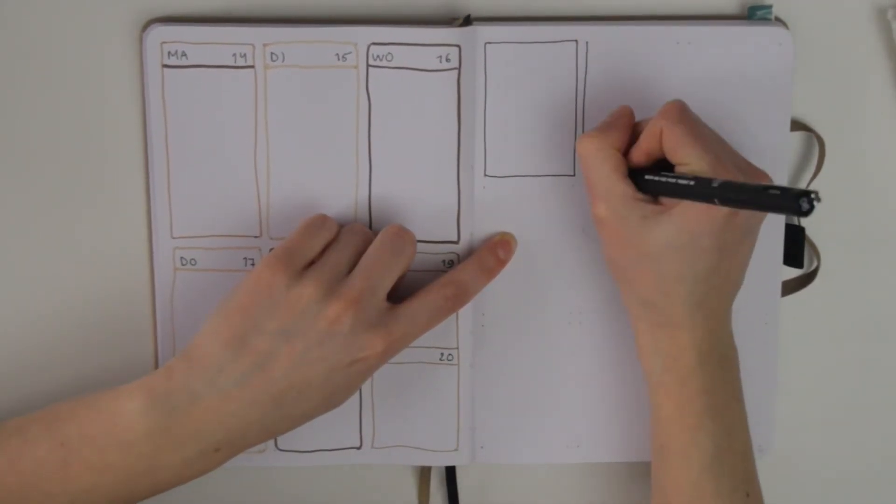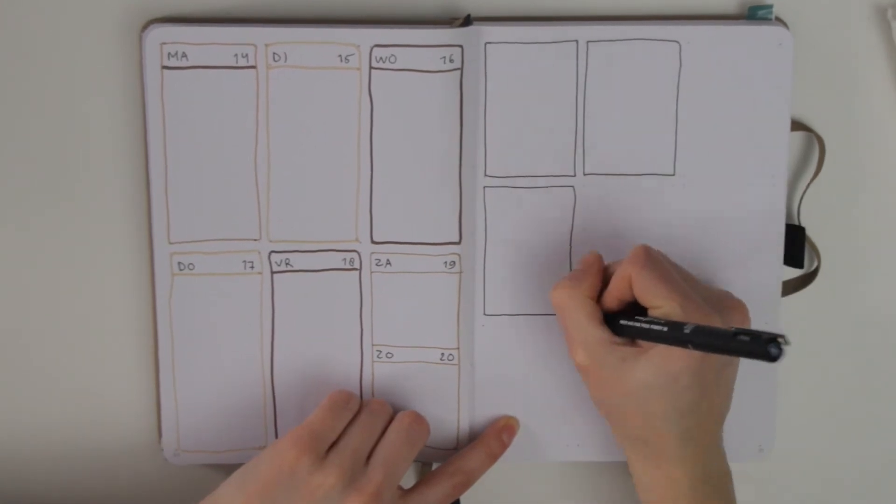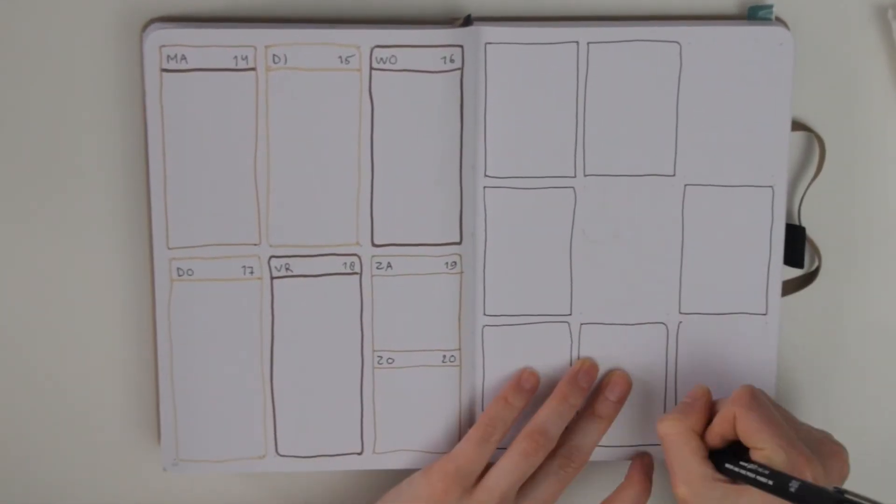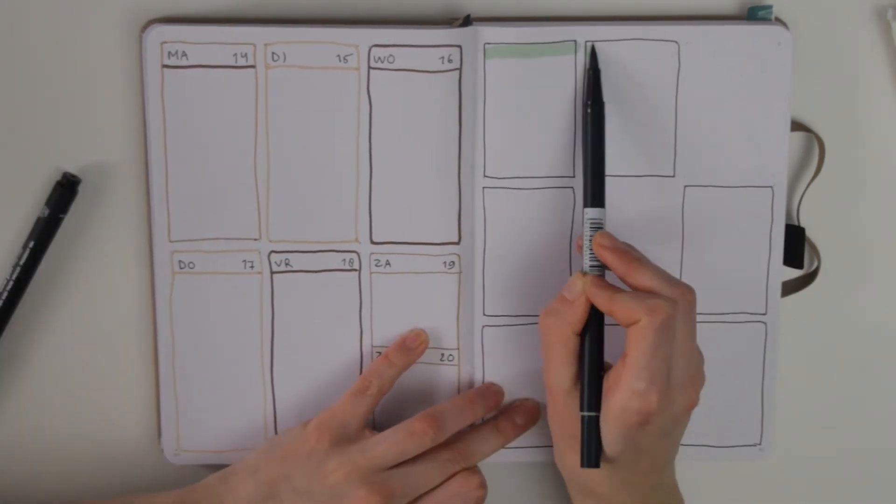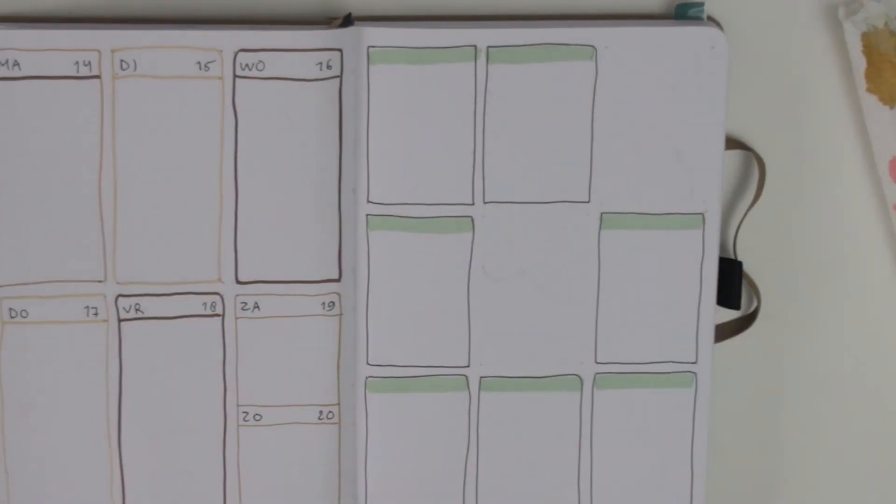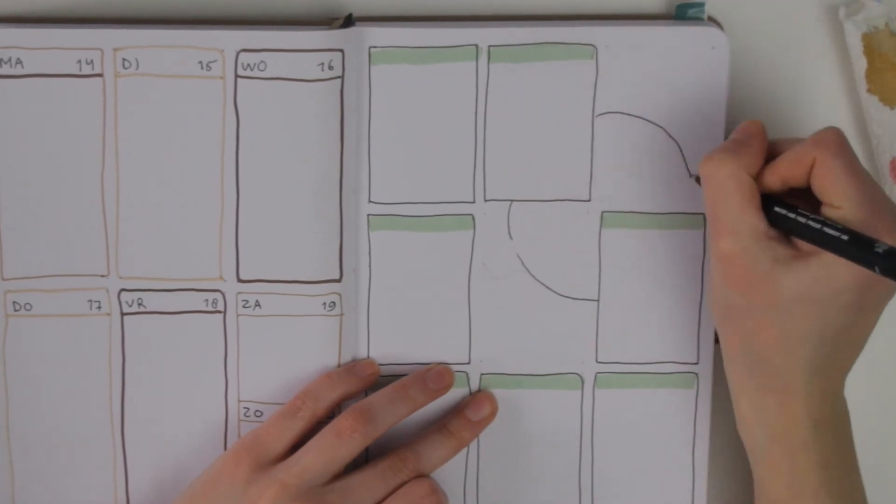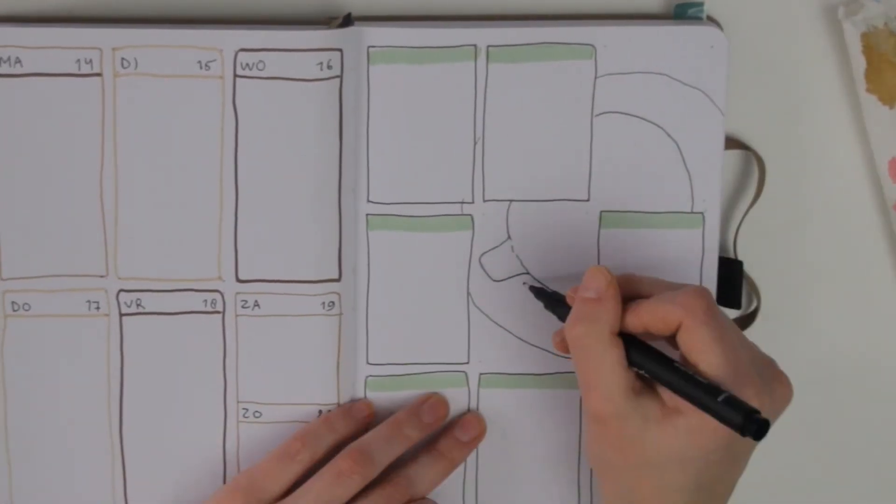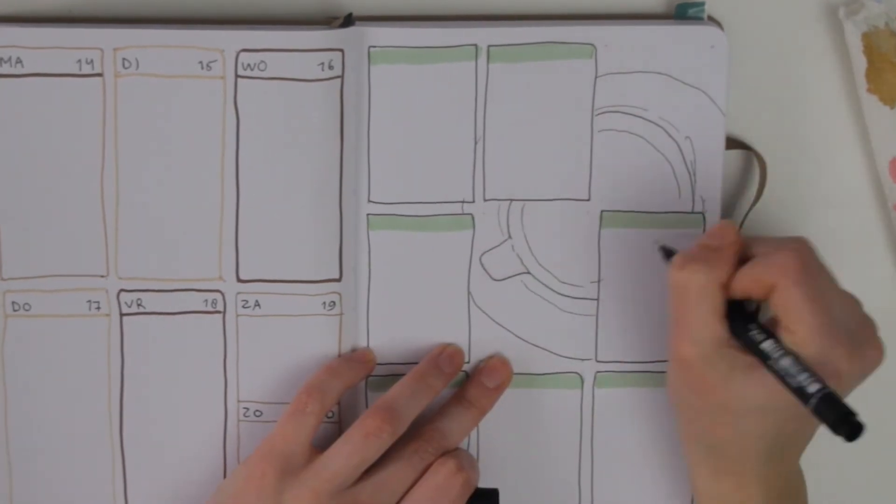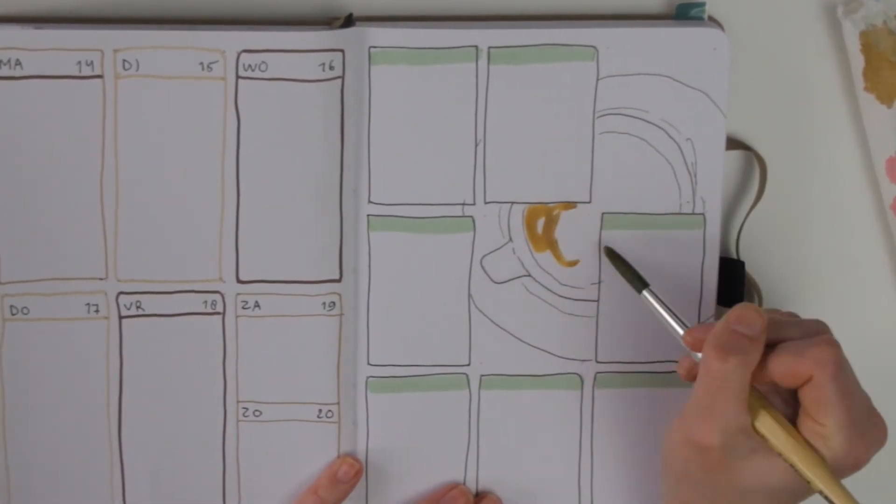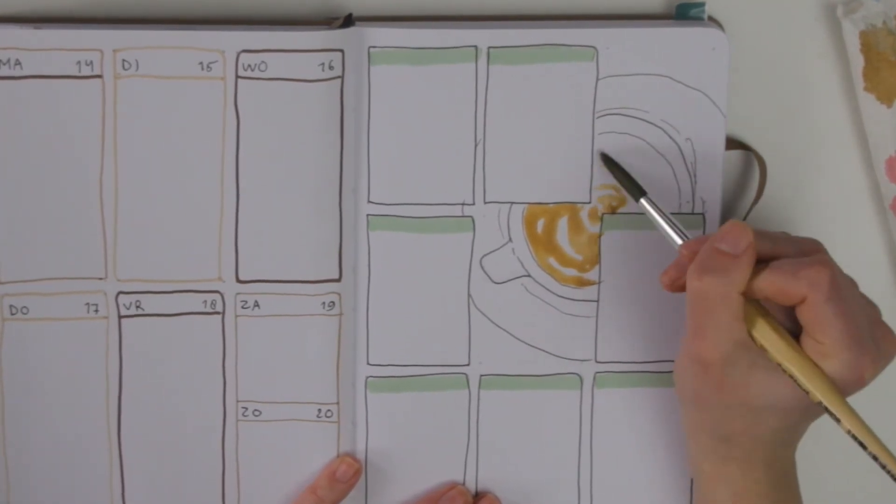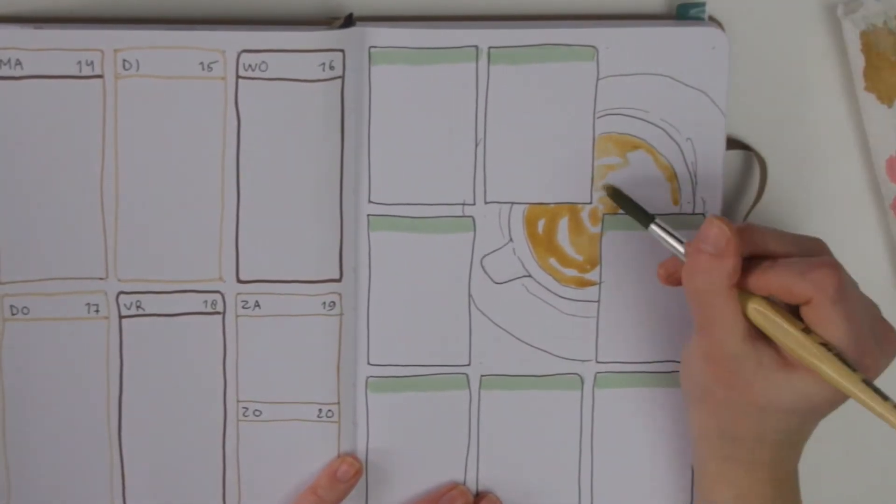And then on the right, which is probably my favorite weekly spread, I just made seven boxes and I had two spaces left over kind of. So in that space I drew a cup of tea and then also used my watercolors again to color it in. And so it looks as if this cup is underneath the daily boxes and I really like how that looks.